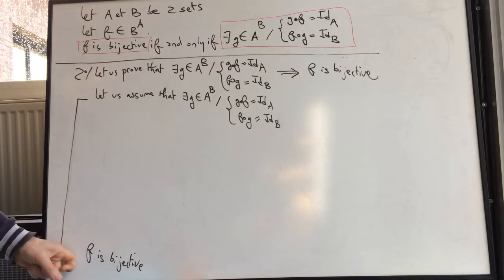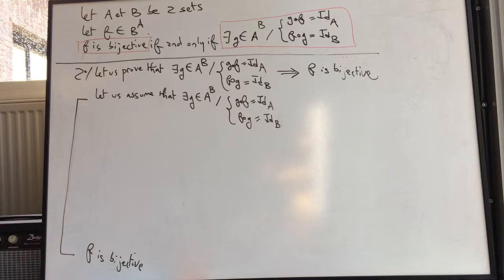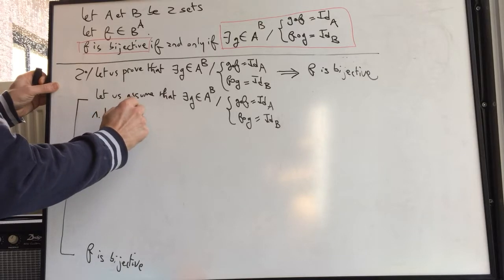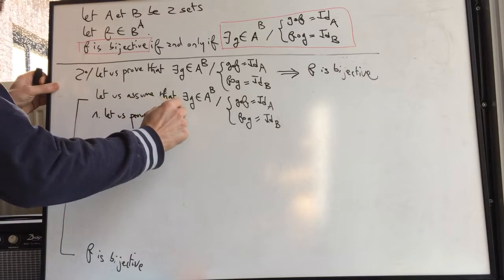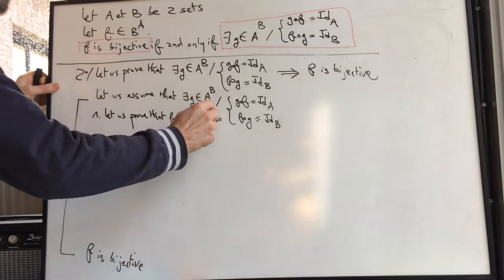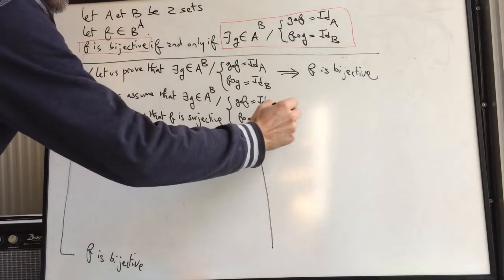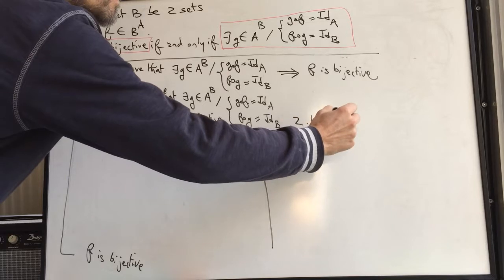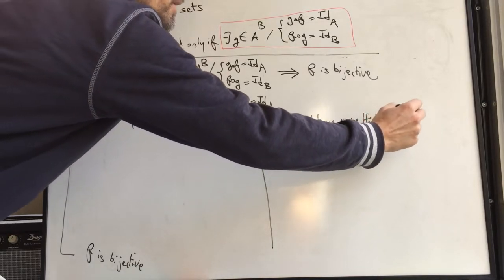Now we look at the conclusion and determine the nature of the sentence. Here we must prove that a function is bijective, so we have two things to prove: first, we must prove f is surjective; second, we must prove that f is injective.